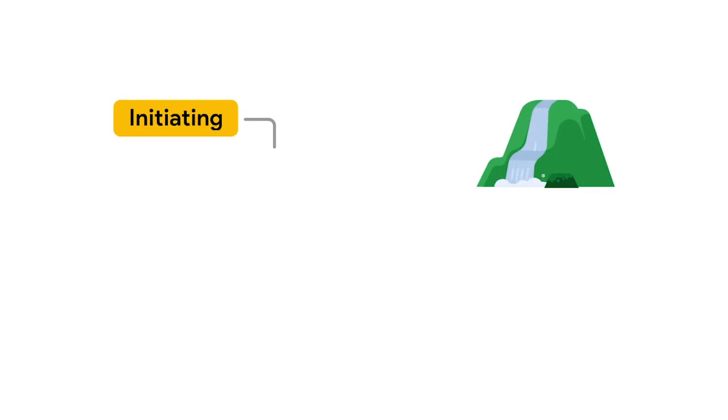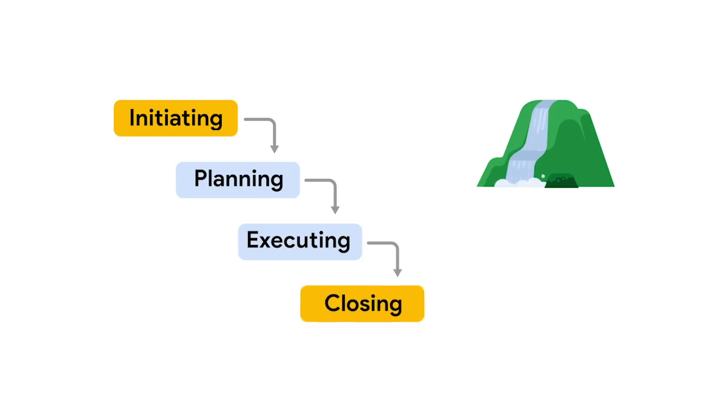Let's take a closer look. The phases of a Waterfall project lifecycle follow the same standard project lifecycle flow that you learned about earlier: Initiating, Planning, Executing — which includes managing and completing tasks — and Closing.